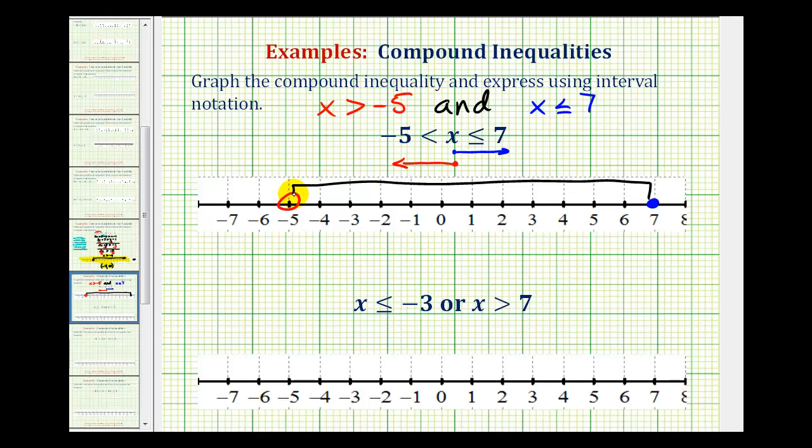Again, it does not include negative five, but it does include positive seven, and then all the numbers between these two. Therefore, in interval notation, we'd have the interval from negative five to seven. It does not include negative five, so we have an open parenthesis here. But it does include seven, so we make a square bracket here.